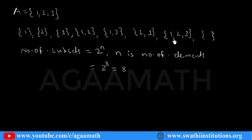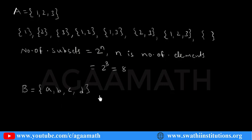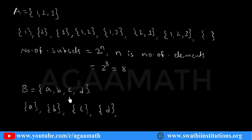Let us try one more example. Let B = {a, b, c, d}. Now let us list all the possible subsets from this given set. The single-element subsets are: {a}, {b}, {c}, {d}. The two-element subsets are: {a,b}, {a,c}, {a,d}...